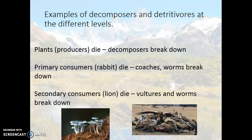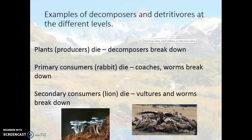Let me give you some examples of how this works. Plants, which are the producers, die and decomposers break them down — those tissues are broken down and the remains go back to the soil. A primary consumer like a rabbit, and a secondary consumer like a hawk, are also consumed by decomposers. As a rabbit dies, it will be broken down and the nutrients returned to the soil — same with a secondary consumer like a lion.